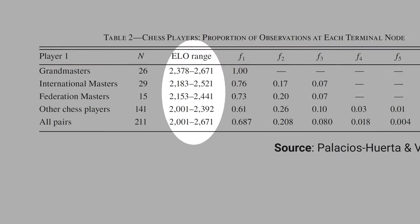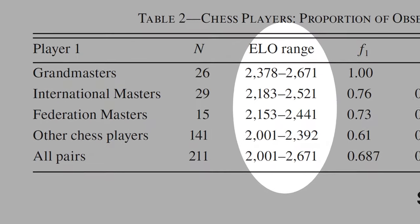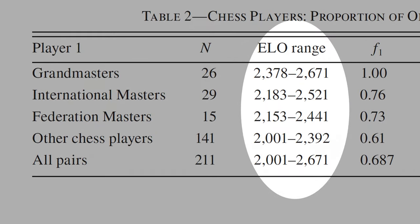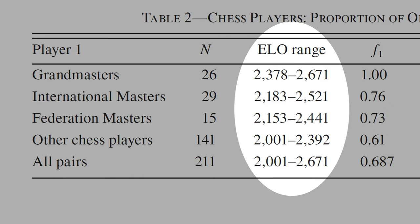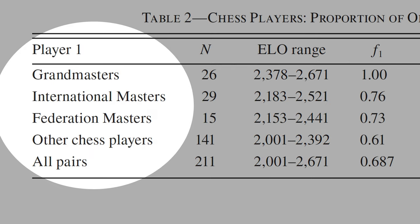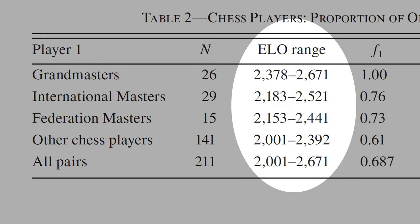What we see here is that the higher the rating, the higher the probability of stopping at the first node. The rating is a great predictor for who will win a match. The chess titles — grandmasters, international masters, federation masters — are functions of rating as well.